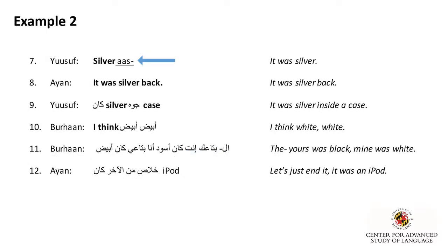Both Ayaan and Burhan are skeptical about the color of the iPod, or the color of its case. In line eight, Ayaan cuts off Youssef, switching into English to clarify that it was silver back. When Ayaan switches in line eight, she uses the juxtaposition between languages to jolt the conversation away from a debate that seems to be going nowhere, and back to the main thread of the narrative. Ayaan uses the contrast between languages to assert her authority and close off an irrelevant subtopic.